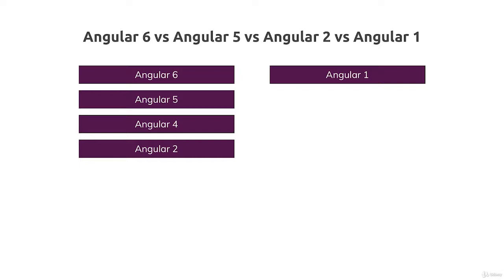Angular 2, back in 2015 and 2016, was a complete rewrite of Angular 1, which was the first Angular framework released. Angular 1 was the first framework to really make single page applications and this better way of manipulating the DOM popular back in the day. Angular 2 was a complete rewrite to fix many of the problems Angular 1 had, mostly performance issues.